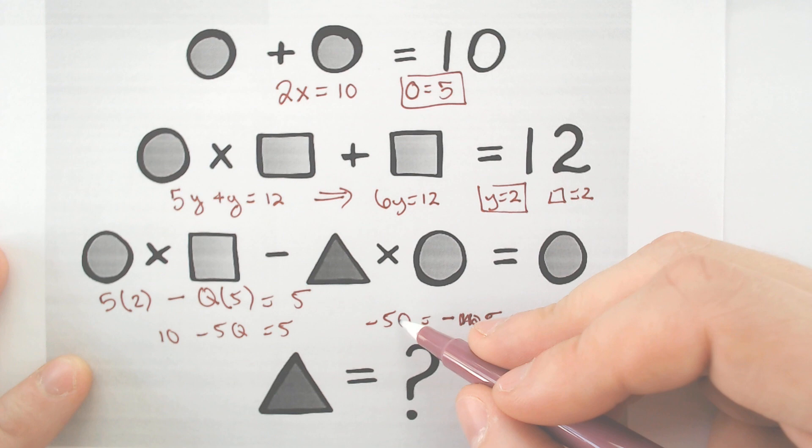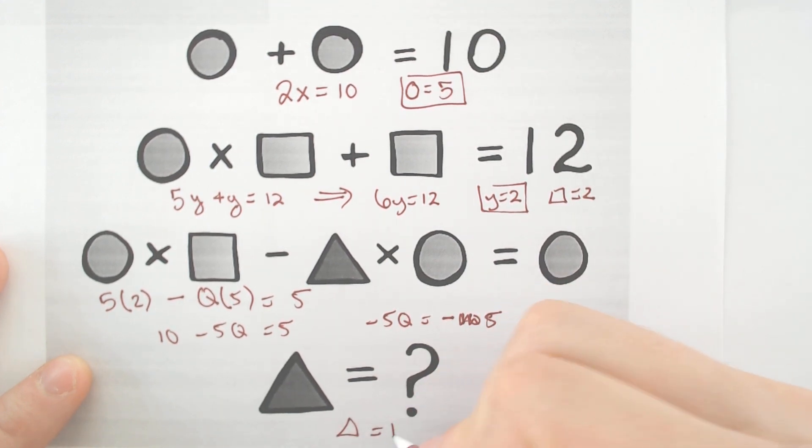And we need to divide negative 5 by negative 5. You get a triangle is equal to, interestingly enough, 1.